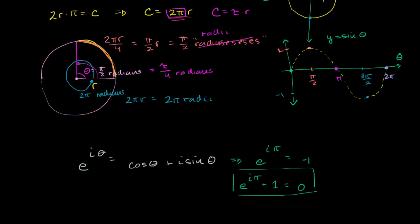The reason why tau is more intuitive here is because you don't have to do this weird conversion — divide by 2, multiply by 2. However many radians in terms of tau, that's really how many revolutions you've gone around the circle.